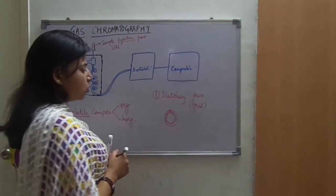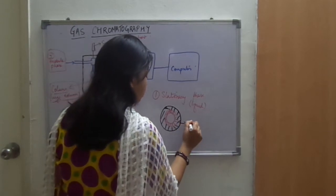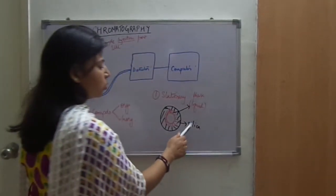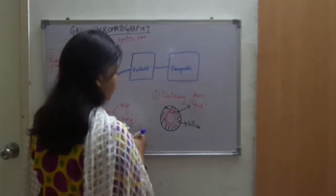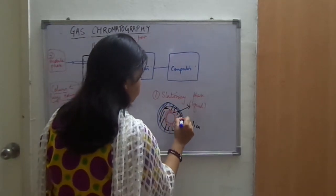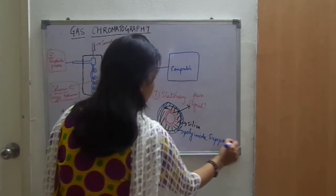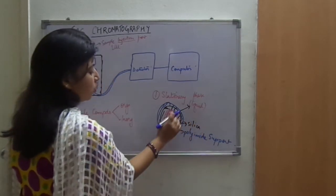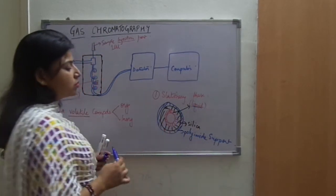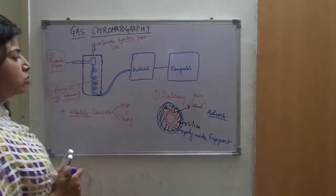The stationary phase is generally a liquid. It is a liquid which is coated on the surface of silica. This is silica. The stationary phase is a liquid coated on the silica. There is also another support on which the silica is coated — a support made up of polyamide. On this polyamide support, silica is coated, and on the silica surface, a liquid is poured. Since the liquid is viscous, it will stick to or absorb itself onto the silica gel. So this is about the stationary phase.